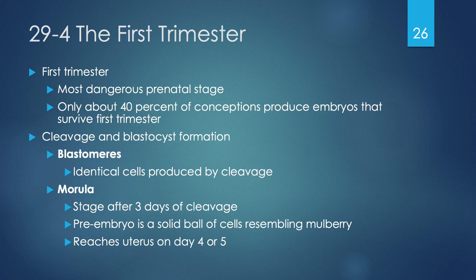Blastomeres are the identical cells produced by cleavage — cells simply replicating and dividing. A morula is formed after about three days of cell replication, going from two cells to four to eight cells. A morula is a pre-embryo of solid cells in a ball — it resembles a mulberry (or more recognizably, a blackberry) — and will reach the uterus on day four or five.